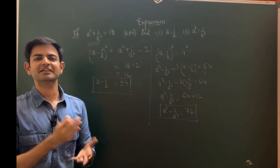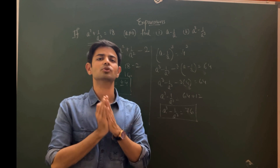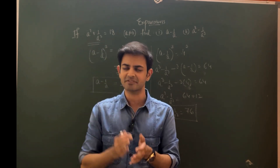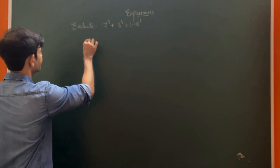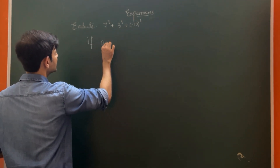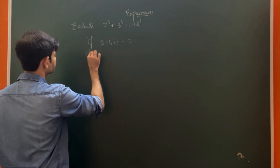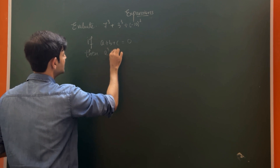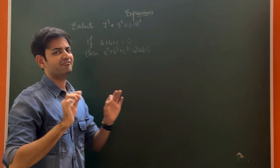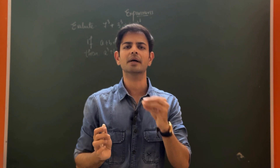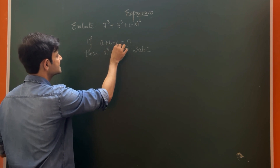If you know the formulas, you can easily apply them and get the answers. This chapter is not as difficult as students perceive it to be. There is a very important property in expansions: if a + b + c = 0, then a³ + b³ + c³ = 3abc.